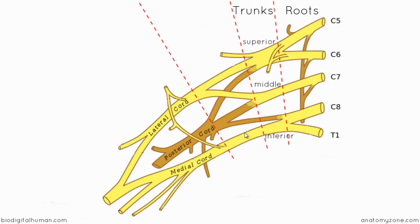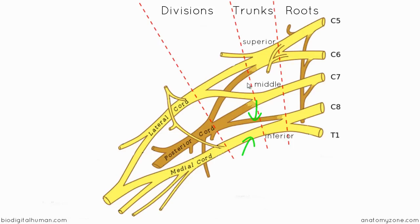Each trunk gives rise to an anterior and a posterior division. So the superior trunk has an anterior and a posterior division, and the middle trunk has an anterior and posterior division. These divisions give rise to cords: the lateral cord, the posterior cord, and the medial cord. So you have roots, trunks, divisions, and cords.